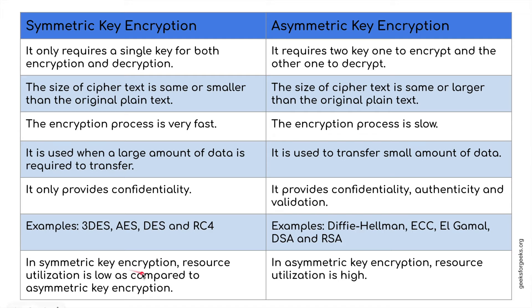Symmetric only provides confidentiality, whereas asymmetric provides confidentiality, authenticity, and the validation of that. We've got some examples here of different kinds of symmetric key encryption methods and asymmetric encryption methods. In symmetric key encryption, resource utilization is low compared with asymmetric, where resource utilization is higher.